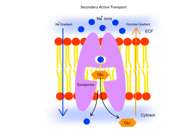The sodium ions are moving into the cell through passive diffusion from high to low concentration. As sodium ions bond to the protein, so does the secondary solute being transported — in this example, glucose. Glucose is moving through the carrier protein into the cell at the same time as the sodium ions, but the difference is that glucose is moving uphill from low concentration outside the cell to high concentration inside the cell.